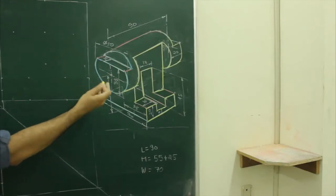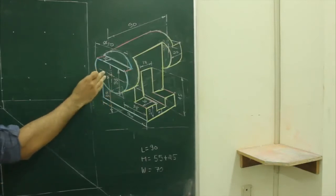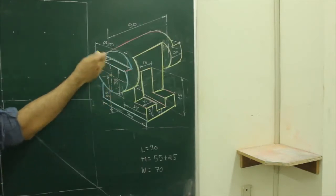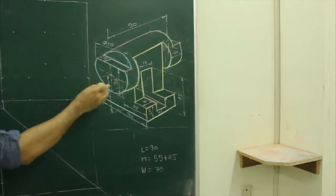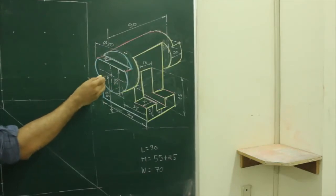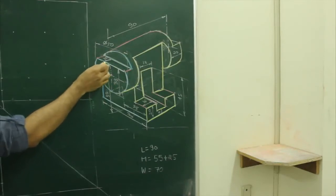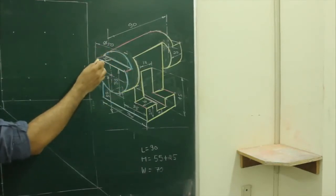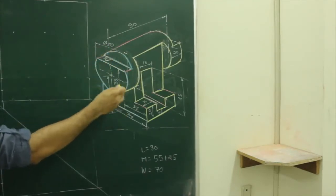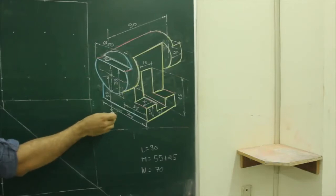First we will draw a layout. After that we will start with a side view, because the circle is visible in side view. So first we will start with the side view, draw the circle, and then we will start the rest.